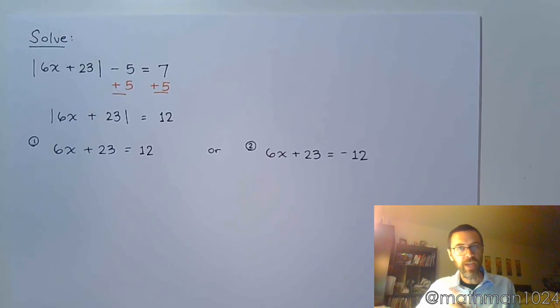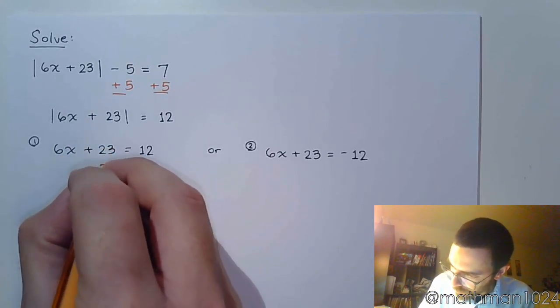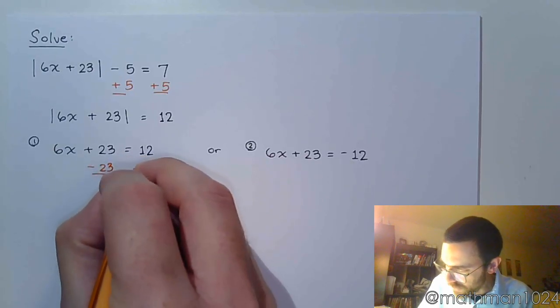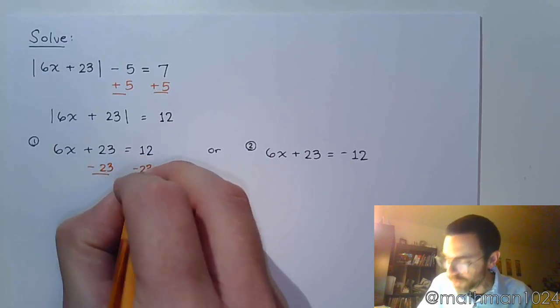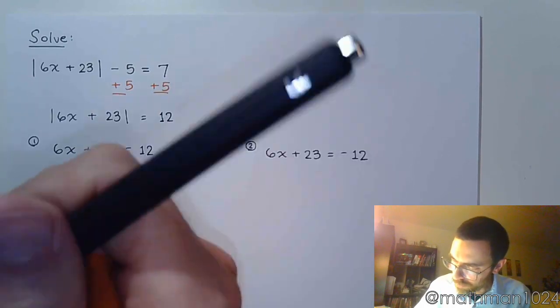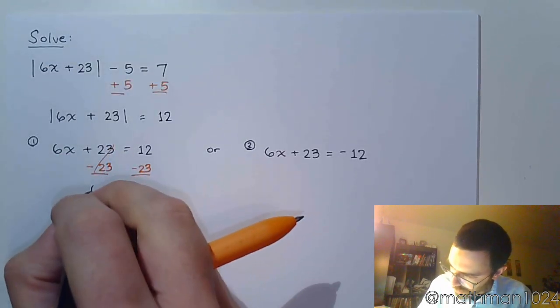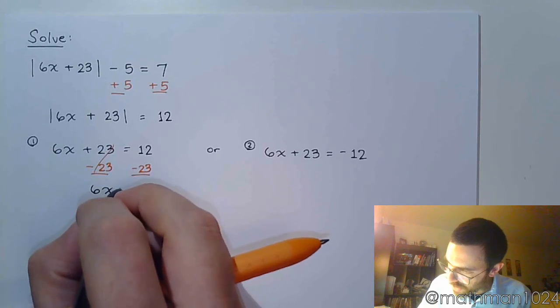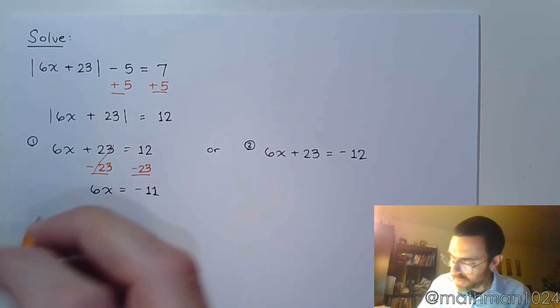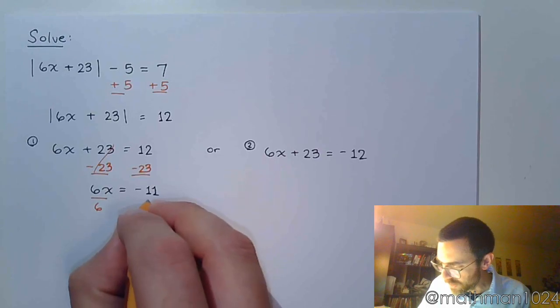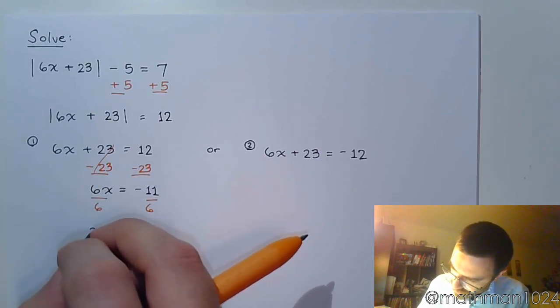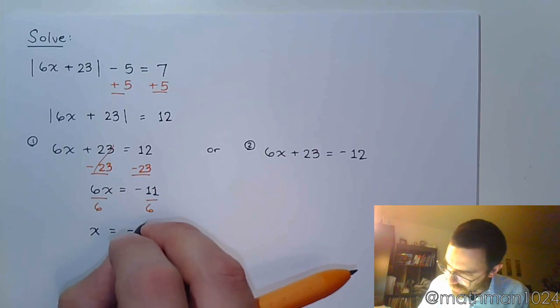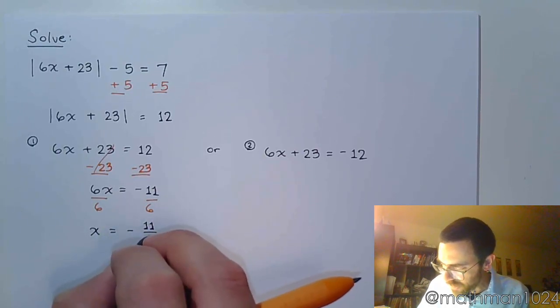So notice here that the absolute value is not even there anymore. It's the absolute value that leads to these two separate equations. And then from here we recognize that these guys are both linear and we go through the process of solving them. And you notice that the steps are exactly the same. I've got to subtract 23 here. I get 6x is equal to negative 11. Divide both sides by 6. So x is equal to negative 11 over 6.